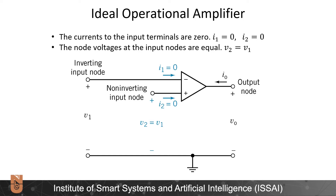During normal operation, an operational amplifier takes the difference between the two inputs (V2 minus V1) and multiplies it with a very high gain, like 1 million, and puts that as output. Even a very small input would produce a huge output causing saturation. We use operational amplifiers nearly in all cases in feedback mode, connecting the output back to the input. In this mode, we assume V2 equals V1, and we also assume infinite input impedance — meaning no current flows into the minus and plus inputs.